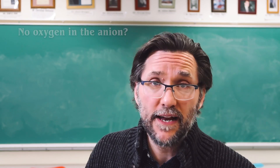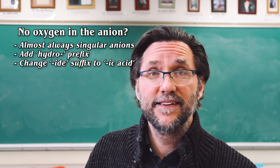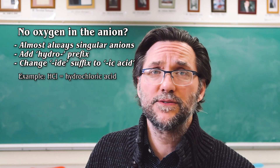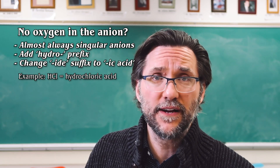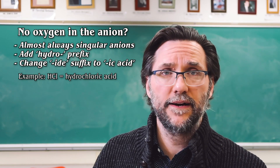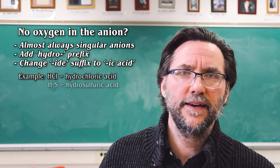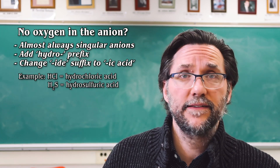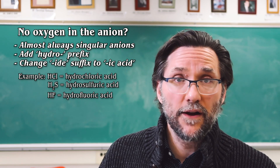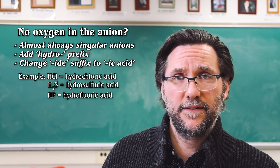Most of the anions that do not contain oxygen are simply elements off the periodic table. The classic example is hydrochloric acid. I always tell students, if you can just remember hydrochloric acid and sulfuric acid, you should be able to reverse engineer the rules for acids. So we take the chloride ion and we just say hydrochloric acid. Hydrosulfuric acid, hydrofluoric acid — they would all be named the same way. It is very important that you remember that 'hydro' means that there is no oxygen in the acid.